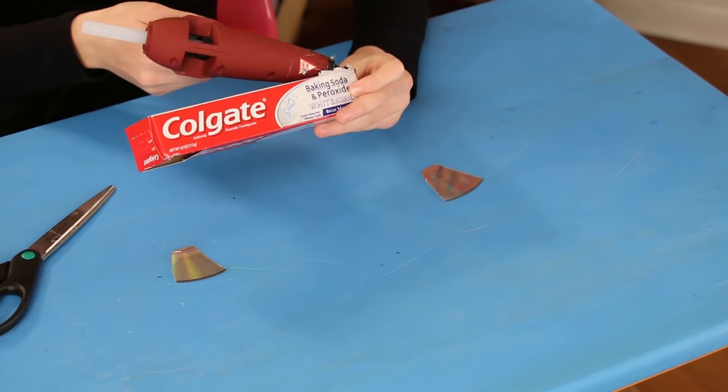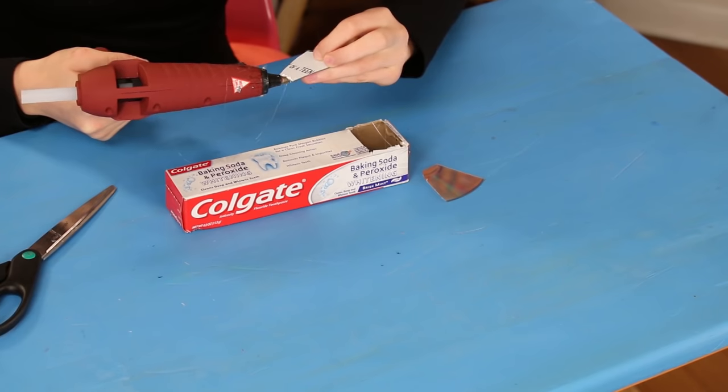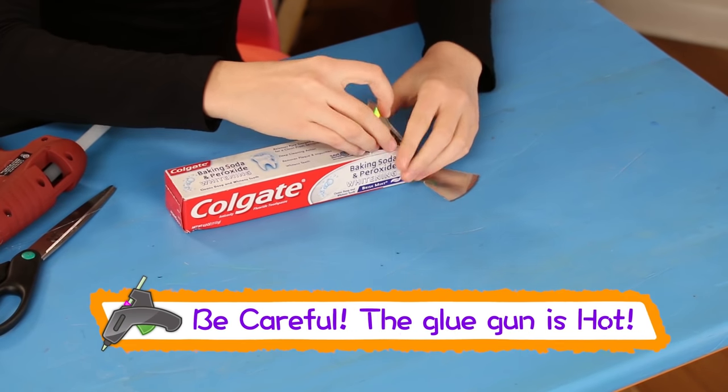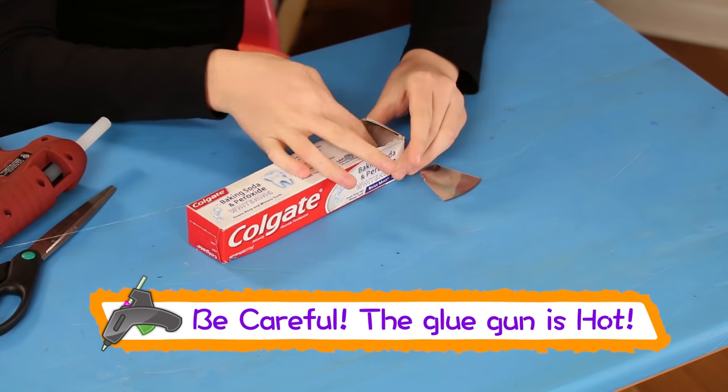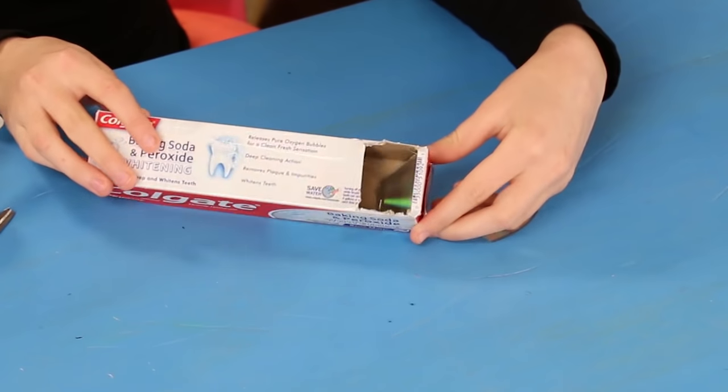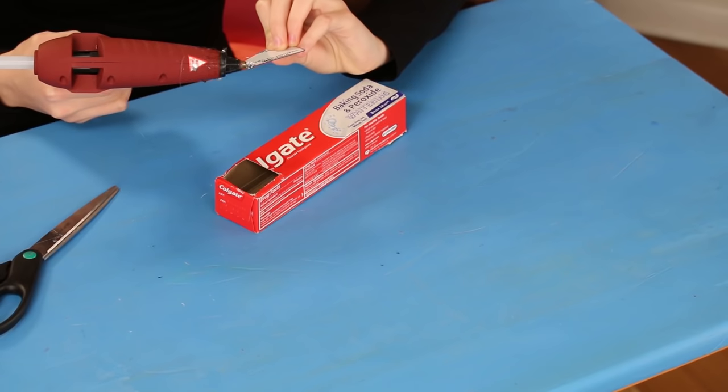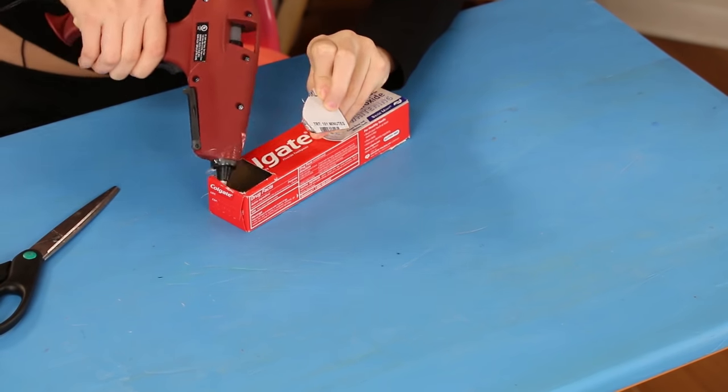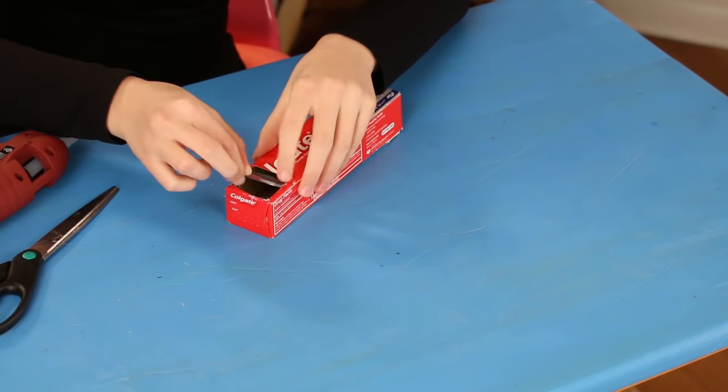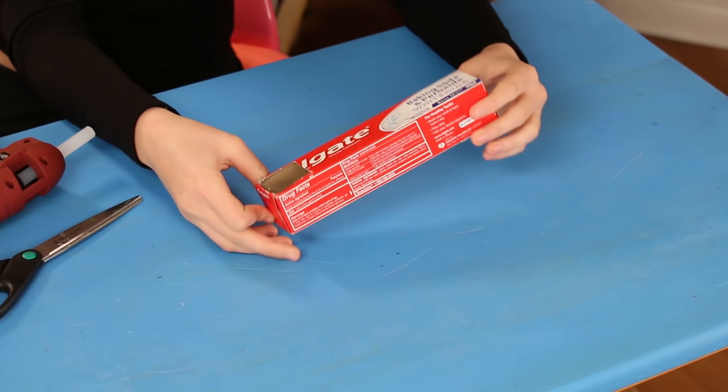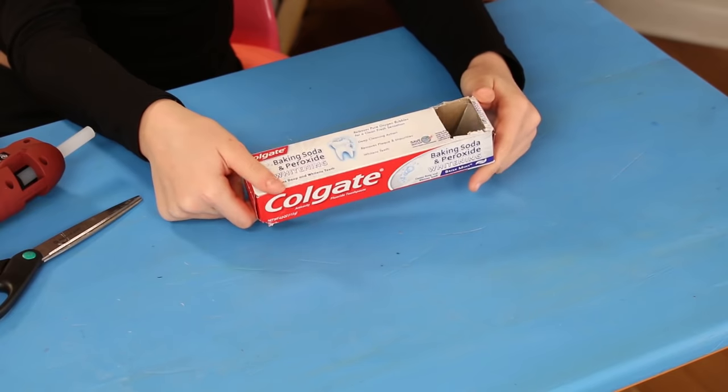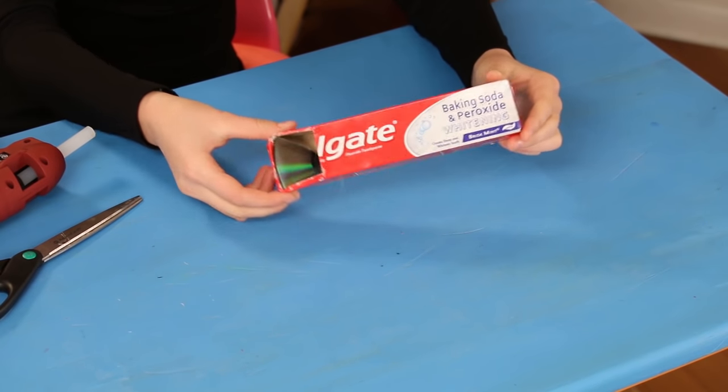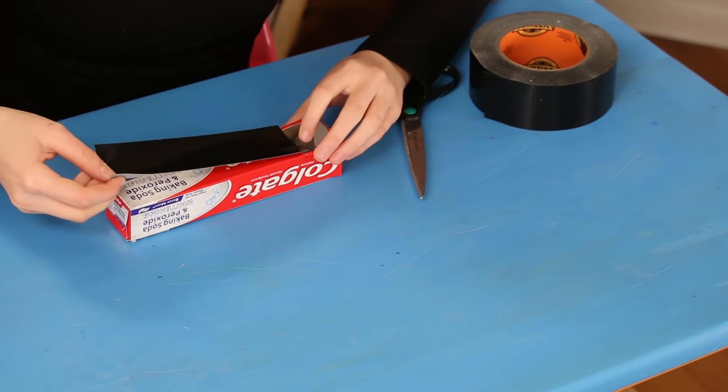Glue one CD piece at an angle that will pick up reflections from outside the box. Now glue the second piece of CD into the other hole. Angle it up so you can see the reflections from the first piece of the CD above it. Cover it with black tape.